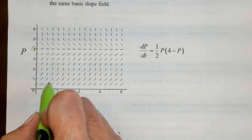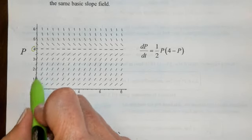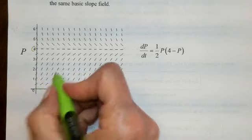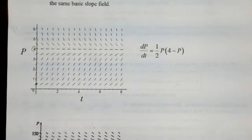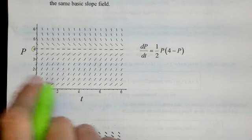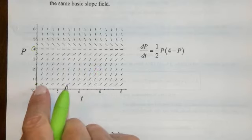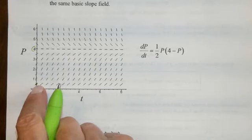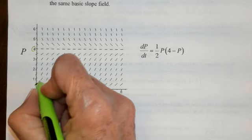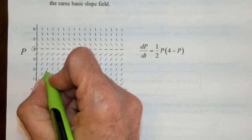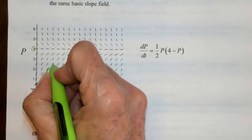So four is our limit as time goes to infinity, which means half of four — that is, two — must be the inflection point. Let's draw a solution curve through the slope field starting at 0.5, following the slopes as the curve rises and then levels off approaching four.